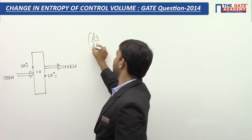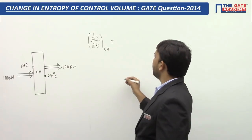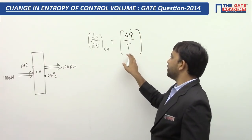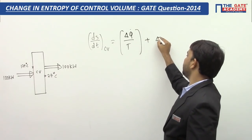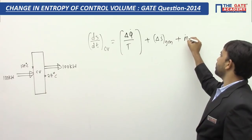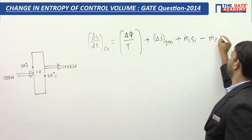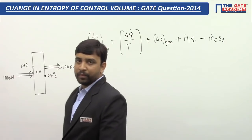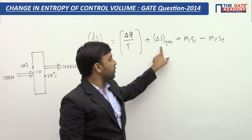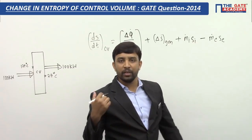For this control volume, I can write the rate of change of entropy. Entropy of the control volume may change due to three reasons: one is due to heat transfer, which causes a rate of entropy transfer; second is entropy generated inside the system; and third, some mass may be entering or leaving the control volume, causing entropy to increase or decrease respectively.